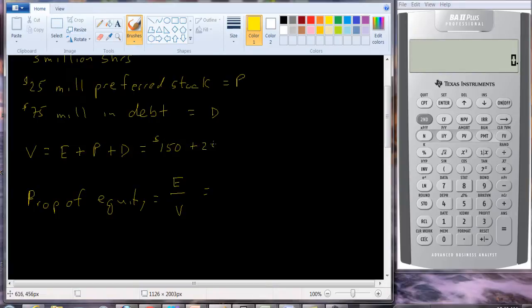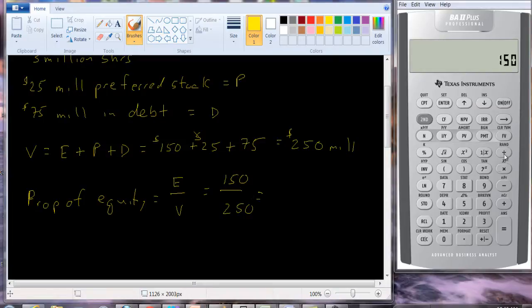Preferred stock is $25, and the debt is $75. So that turns out to be $250 million. So, what's the value of the equity? It's going to be $150 divided by $250, and if we just punch that into our calculator, we get 60% or 0.6.